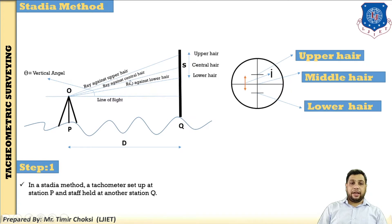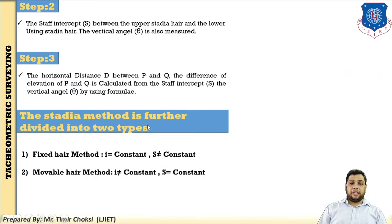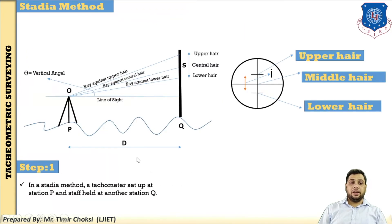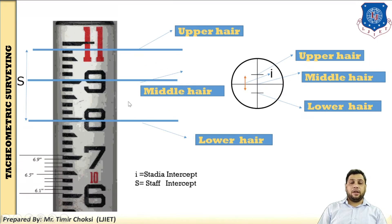The ray against the upper hair gives the upper head reading; similarly the central head reading and the lower head reading. The stadia method is further divided into two: the fixed hair method and the movable hair method. The major difference is: in the fixed hair method, i equals constant and S is not constant; in the movable hair method, i is not constant and S equals constant. In the fixed hair method, there is no change in i (the stadia interval in the diaphragm) and S is variable. In the movable hair method, i is changed and S is variable.